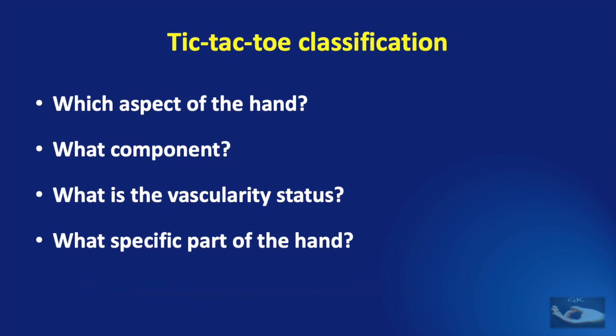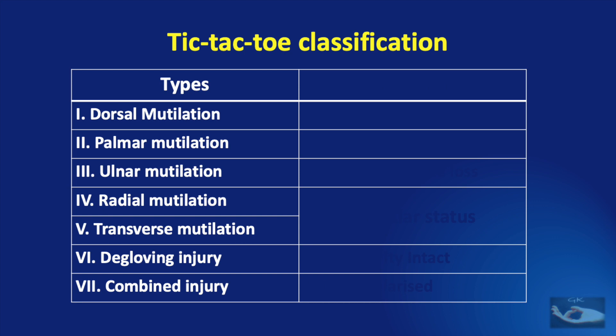The tic-tac-toe classification takes into account the aspect of the hand involved, the component involved, the vascularity status, and the specific portion of the hand. According to the type of mutilation, it could be dorsal, palmar, ulnar, radial, transverse, degloving, or a combined injury.